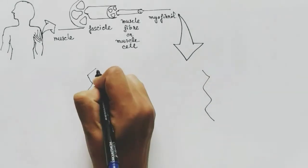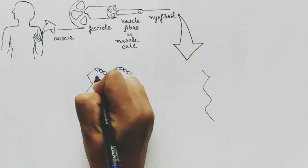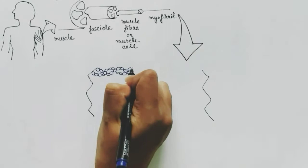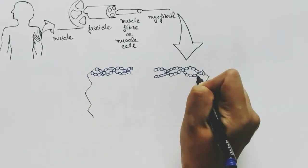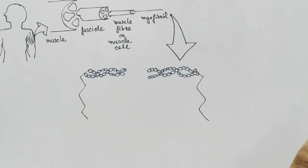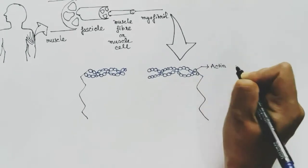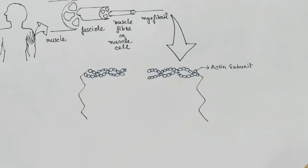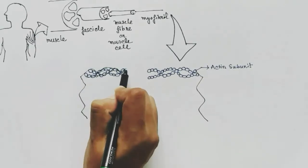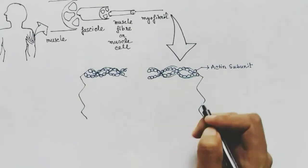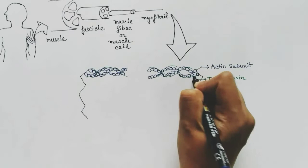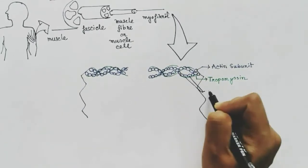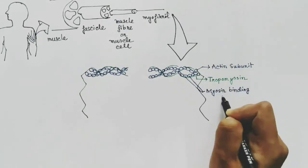I'm drawing only one sarcomere between two Z-lines, first drawing the thin filament or the actin filament. These ball-like structures are the actin subunits of the actin filament. The thin filament contains two more components: this green line I'm drawing is the tropomyosin structure, which actually covers the myosin binding sites of the actin subunits.